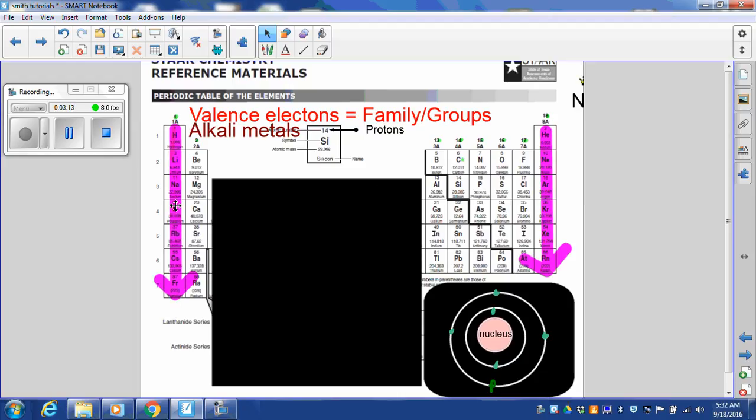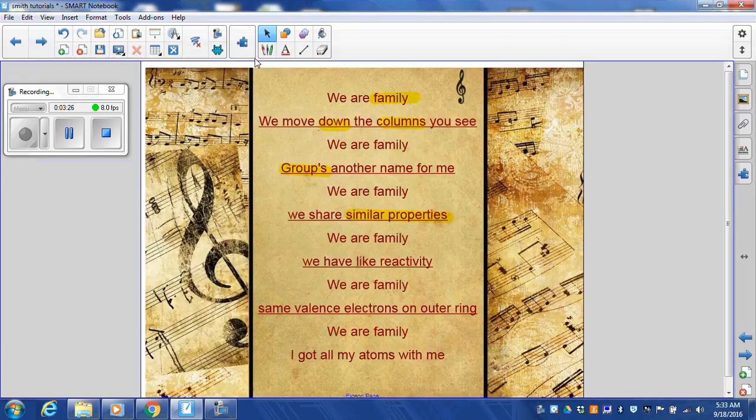They're very reactive. They're going to combine quickly with other elements. Family group 18 are the noble gases. They all share similar properties. They're not going to react with the other elements. And that brings us to that next line.